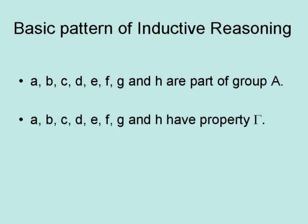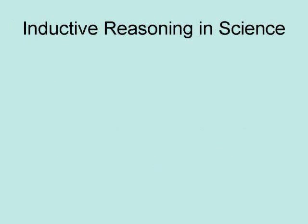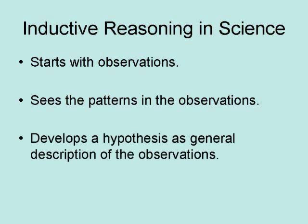A, B, C, D, E, F, G, and H have property gamma. Therefore, all members of group A have property gamma. Inductive reasoning in science starts with observations, sees patterns in the observations, develops a hypothesis, and has a general description of the observations.